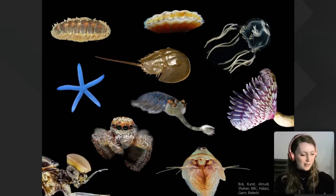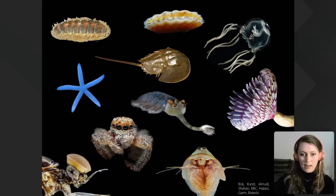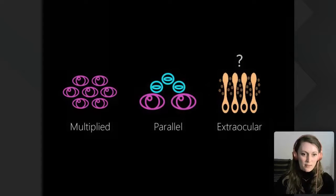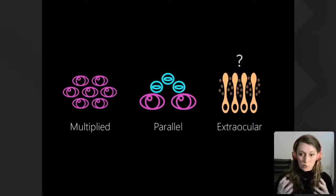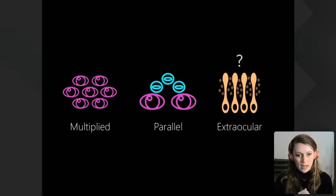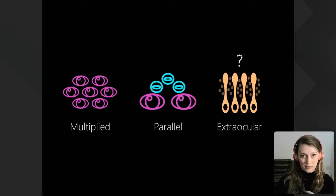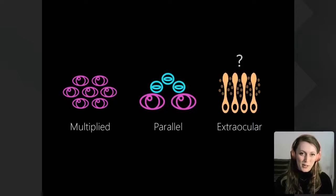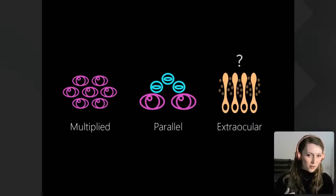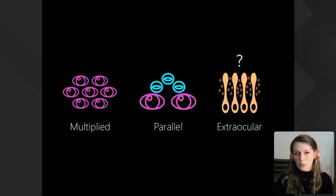This diversity can be sorted into three broad groups. First, animals with large numbers of identical visual units — what we call multiplied visual systems, the same structure repeated over and over, possibly across the body. Second, systems where more than one type of eye is working, with each type potentially sensing something different. Third, extraocular visual systems — still pretty mysterious — where it isn't clear whether the animal has one eye, several, or none at all, but vision still seems within the capacity of these animals.